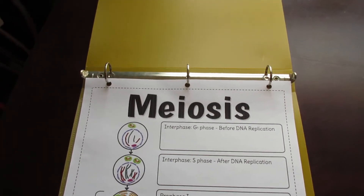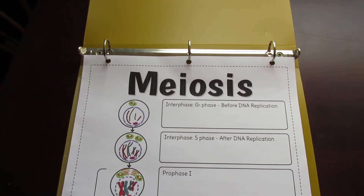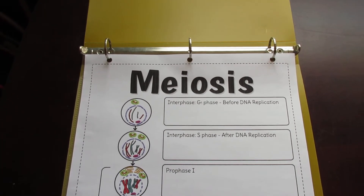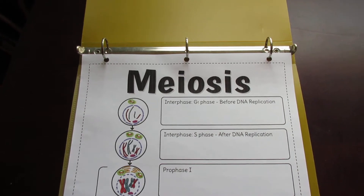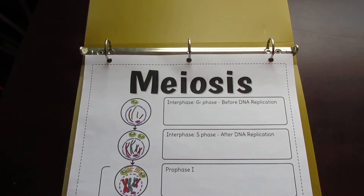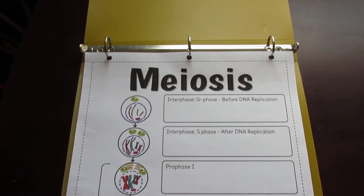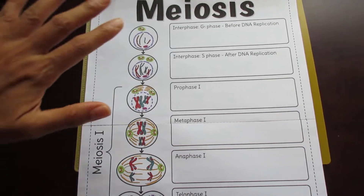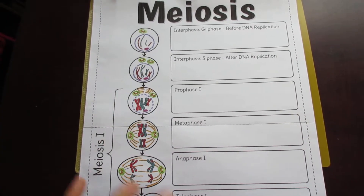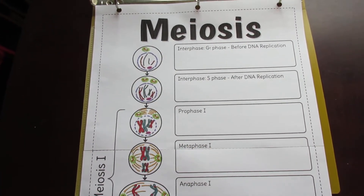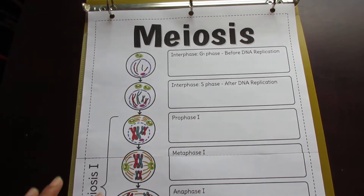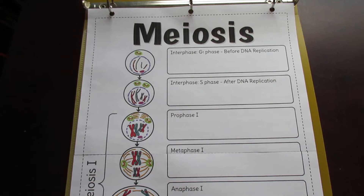Meiosis is typically a very difficult topic to teach. There's a lot going on, and it's difficult to fit it all on one page. That's why I've chosen the three-page format, so that students can see all of the diagrams and have enough room to put in their descriptions of the events occurring in each stage.